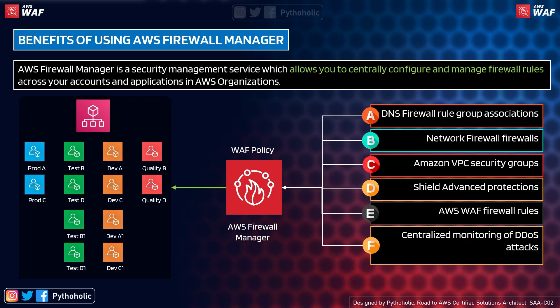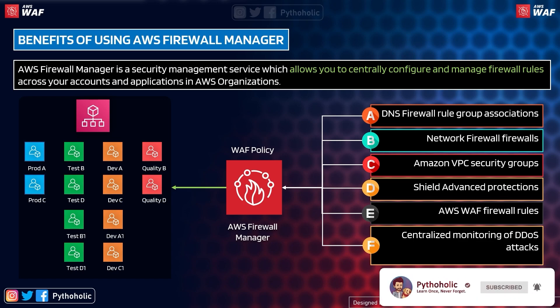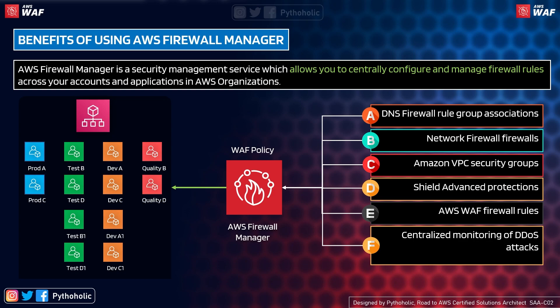For example, DNS firewall rule groups — if you've used Route 53, you know there is a DNS firewall rule group that defines DNS firewall behavior for your VPC, and you can enable it using WAF and AWS Organizations. Similarly, you can configure network firewalls, AWS VPC security groups, Shield Advanced protection, and AWS WAF firewall rules and policies. The Firewall Manager also provides centralized monitoring of DDoS (distributed denial of service) attacks across your organization. All points from A to F can be configured using the Firewall Manager.